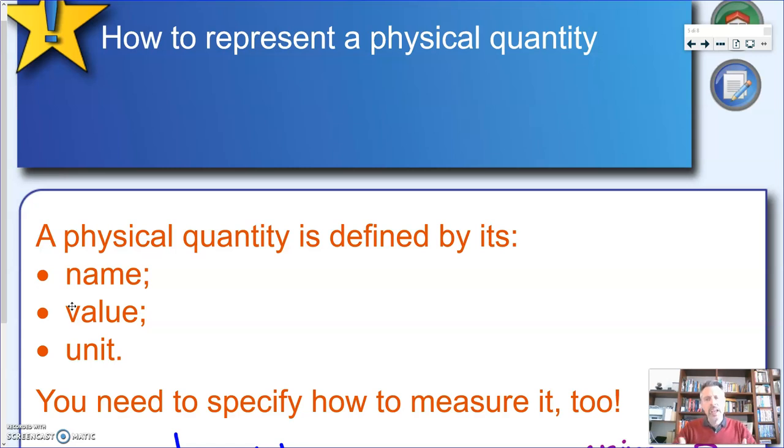So for every physical quantity we will have a corresponding unit. And of course, how do we get the number? How can I tell that this has this weight, this thing has this temperature? You need also to say how we can measure it. So these four elements—the name, the value, the unit, and the measuring tool—are key elements that help us define a physical quantity.